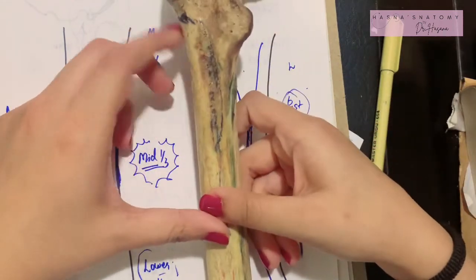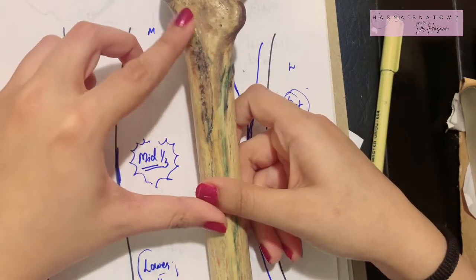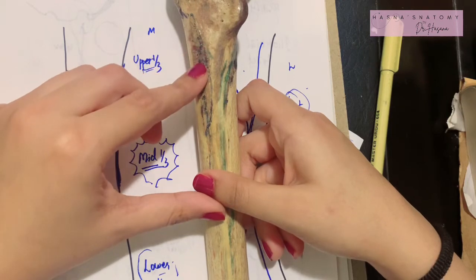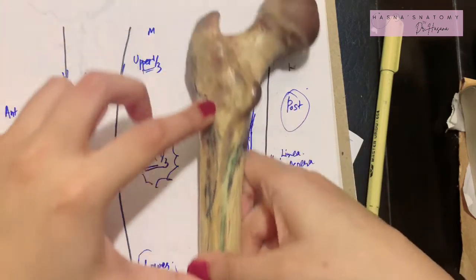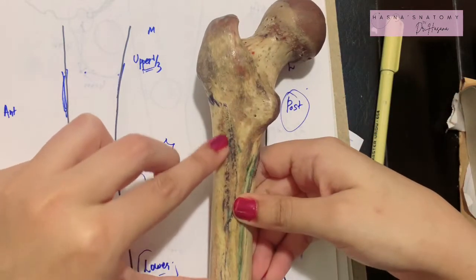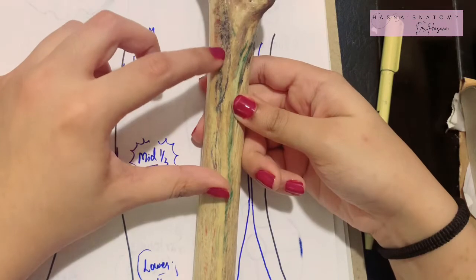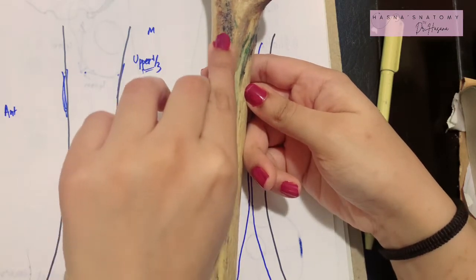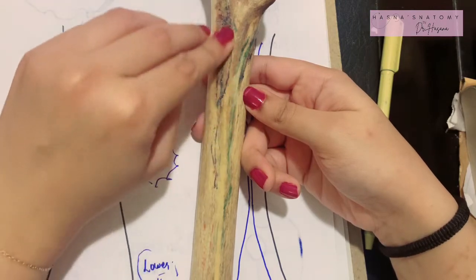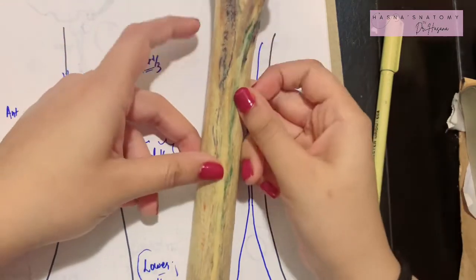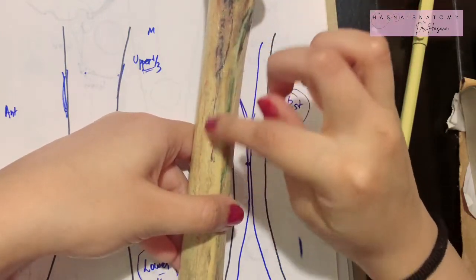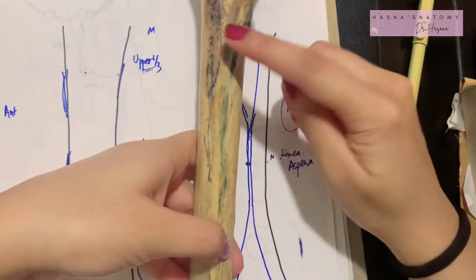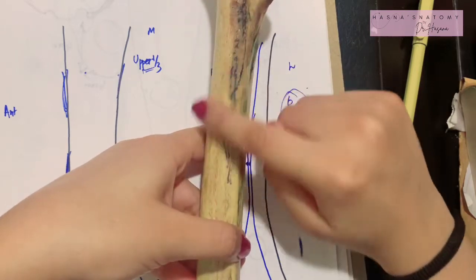The border that lies more laterally: in the posterior part of your upper one-third of the shaft, there is a rough tuberosity known as the gluteal tuberosity, which gives attachment to the gluteus maximus. This is the medial lip of the gluteal tuberosity, and this is the lateral lip of the gluteal tuberosity. The lateral lip of the gluteal tuberosity joins the lateral lip of the linea aspera, and this lateral lip of the gluteal tuberosity is your fourth border. So in the upper one-third we have medial, lateral, the spiral line, and the lateral lip of the gluteal tuberosity — giving four surfaces: anterior, medial, lateral, and posterior.